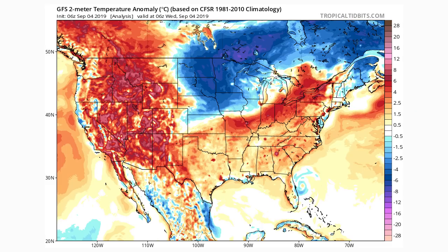Hello guys, today in this video we're going to be talking about the upcoming pattern, going day by day for the next 10 to 15 days, showing you the temperature anomalies and what the pattern is going to look like for the entire United States. Before I get started, please subscribe if you like weather-related content and check out the links in the description. The Facebook group has over 600 members and is a very active community for weather discussion.